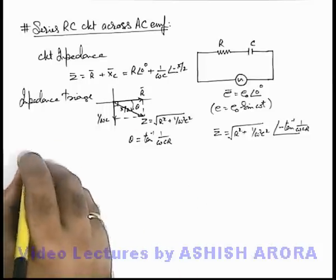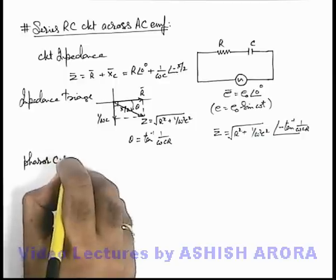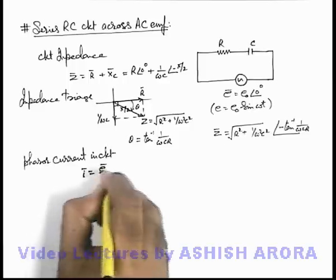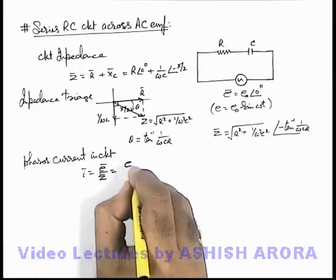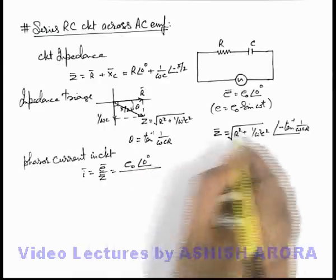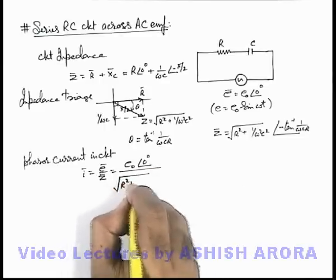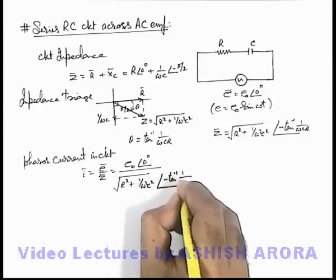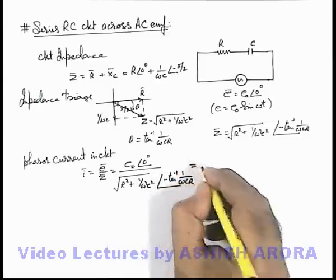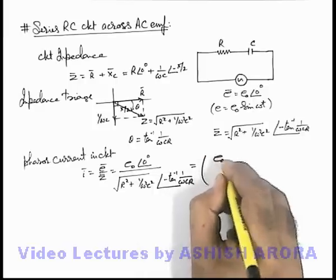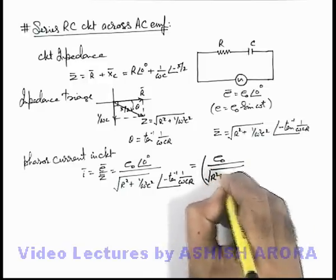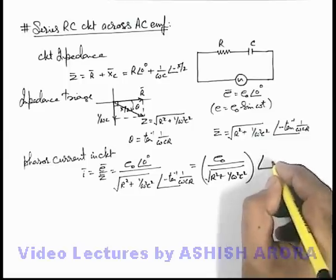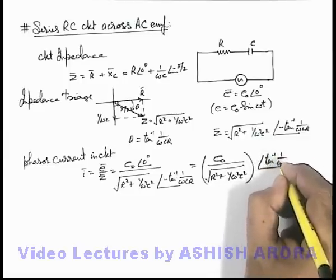By Ohm's law, the current phasor in the circuit can be written as E phasor divided by Z phasor. This gives e-not at angle zero degree, divided by root of R-squared plus 1 by omega-squared C-squared at angle negative tan-inverse of 1 by omega-C-R. Simplifying, the current amplitude is e-not divided by root of R-squared plus 1 by omega-squared C-squared, and the initial phase is positive tan-inverse of 1 by omega-C-R.